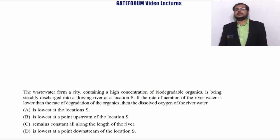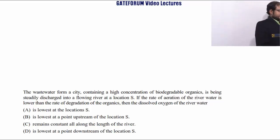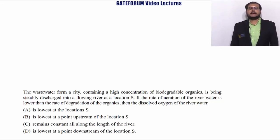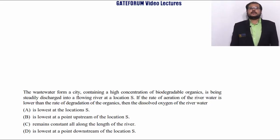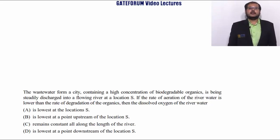We are going to solve questions for GATE 2017, Set 1. The first question is: The wastewater from a city containing high concentration of biodegradable organics is being steadily discharged into a flowing river at a location S. If the rate of aeration of the river water is lower than the rate of degradation of the organics, then the dissolved oxygen of the river water will be...